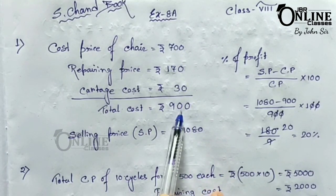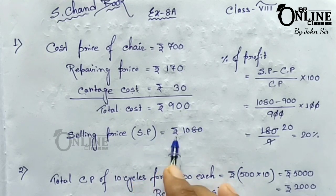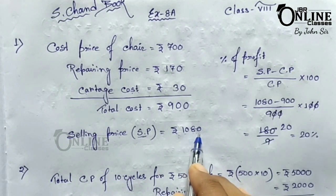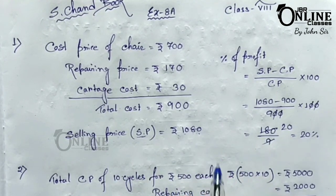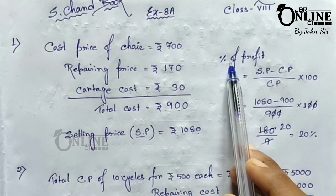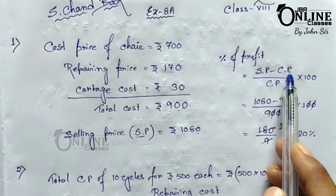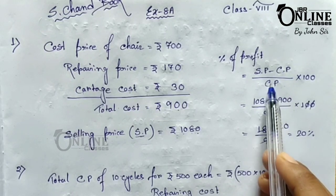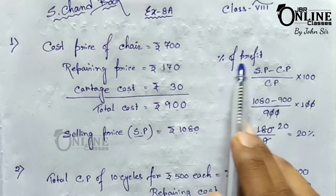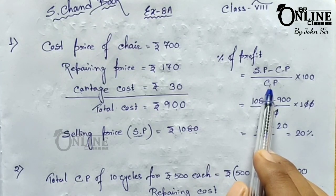The total cost price comes to rupees 900. The chair was sold at rupees 1080, so the selling price SP equals 1080. To find the percentage of profit, the formula is: SP minus CP, divided by CP, into 100. Always remember that the percentage of profit or loss is always calculated on the value of CP.